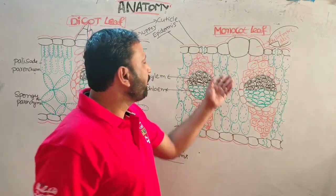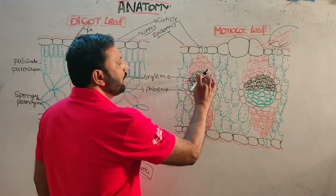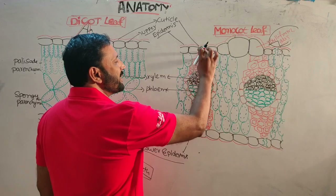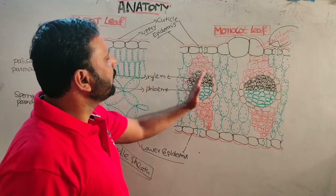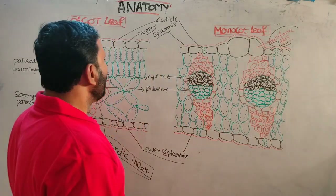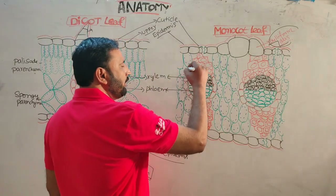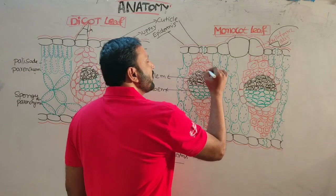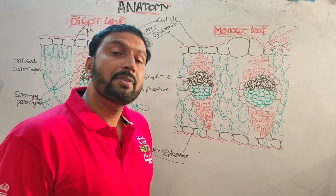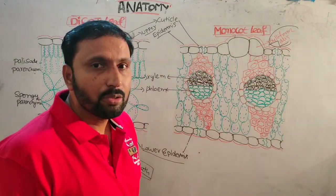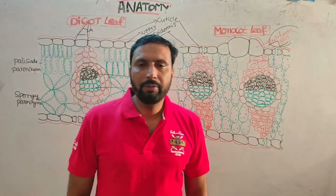The mesophyll cells in monocot leaf are arranged with gaps, contain chloroplasts, and perform photosynthesis. Vascular bundles are conjoint collateral closed in both dicot and monocot leaves, with xylem towards upper epidermis and phloem towards lower epidermis. However, in monocot leaf, bundle sheath cells and bundle sheath extensions are made up of sclerenchyma, while in dicot leaf they are parenchyma. This is the main difference.